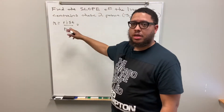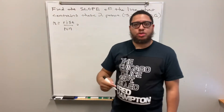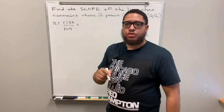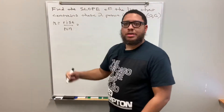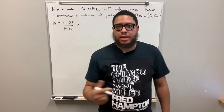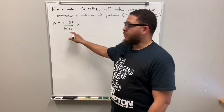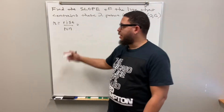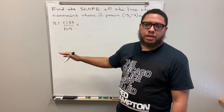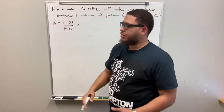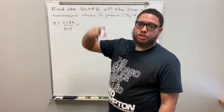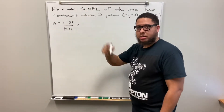The denominator is your run — that's your horizontal movement. If the number in the denominator is positive, you move to the right. If it's negative, you move to the left. If it's zero, it's undefined because we can't divide by zero. That would represent a vertical line — straight up and down.